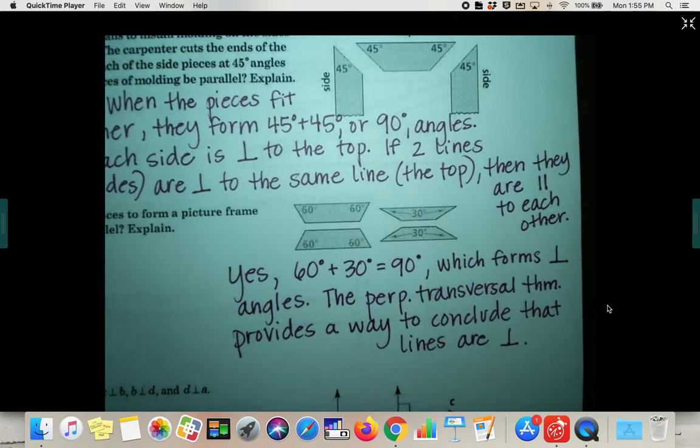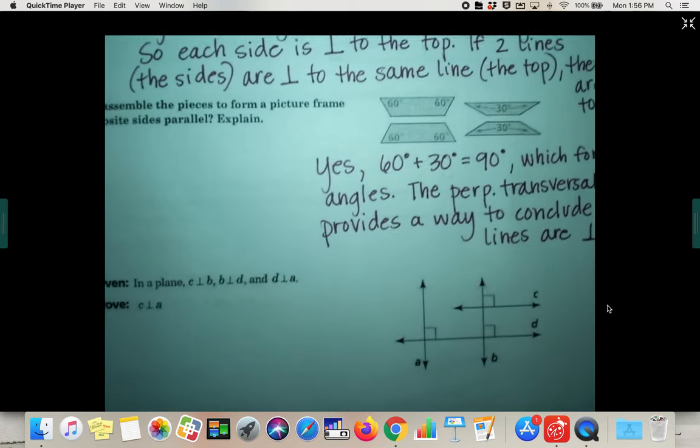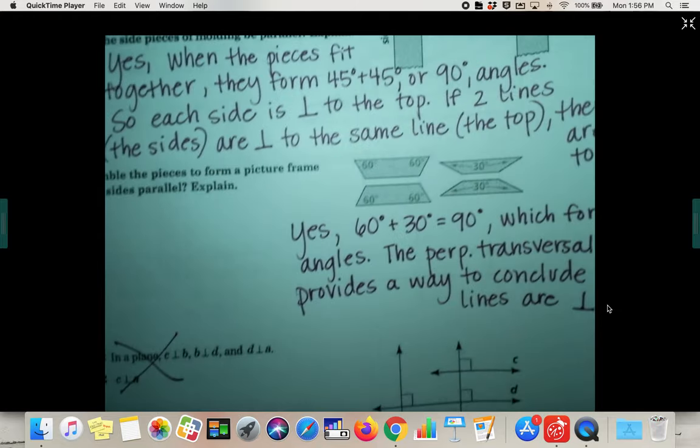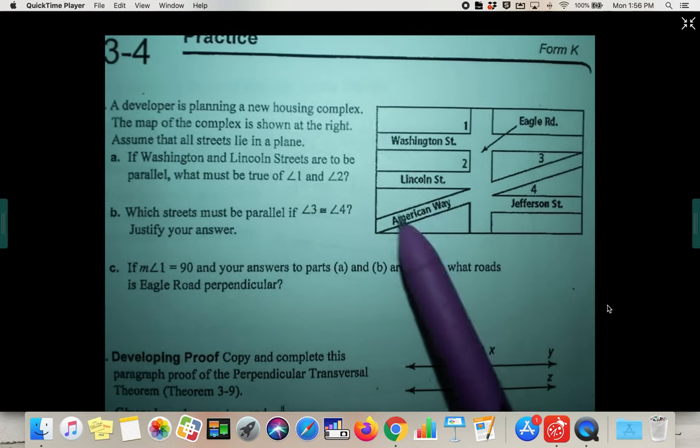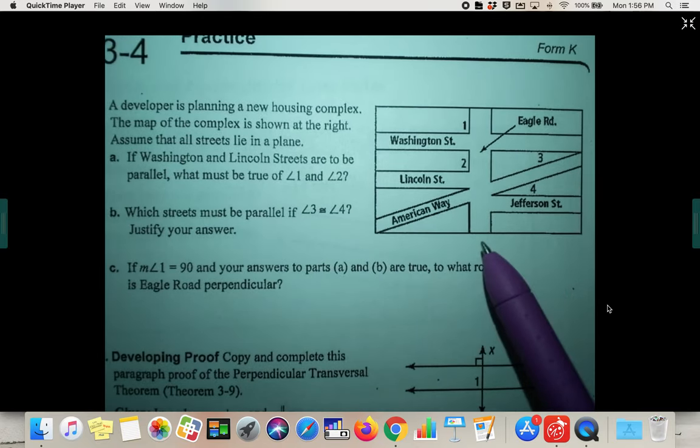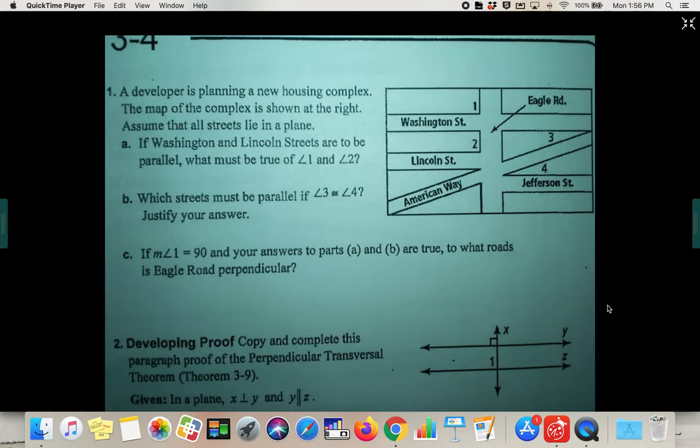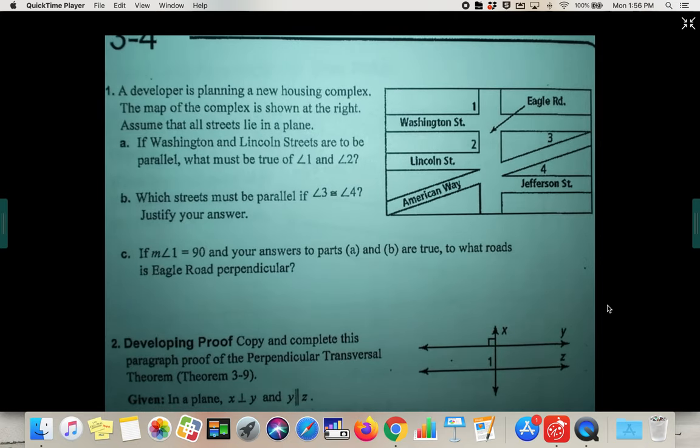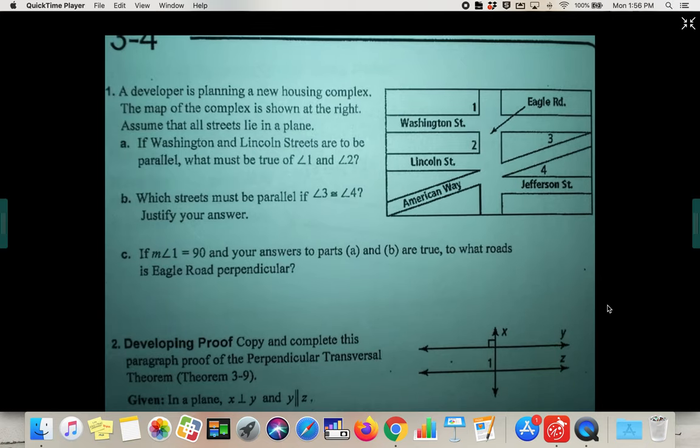Alright, we are going to wait to do proofs on our next page. So you can cross off the bottom two on this particular worksheet, because we are going to do them now on the next page. So let's go to the next page, which is 3.4 practice. This is a map, so this should look similar to a map that you guys have done recently. A developer is planning a new housing complex. The map of the complex is shown at the right. Assume all streets lie in the same plane.